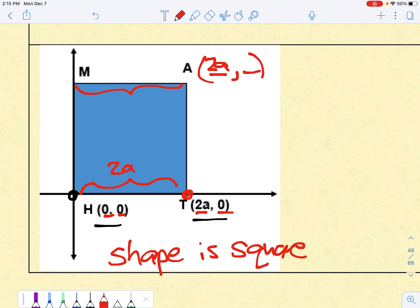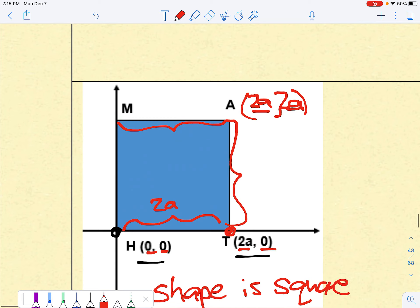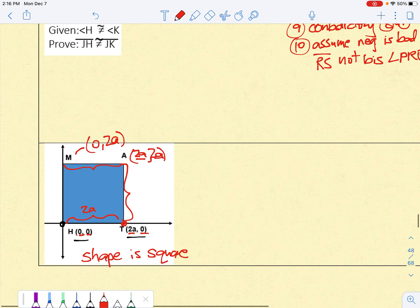So 2a, 2a. Now, if it's a square, this distance also must be 2a, so the y-coordinate must be 2a. And by the same token, x-coordinate is zero, but the y-coordinate is still 2a. All right?